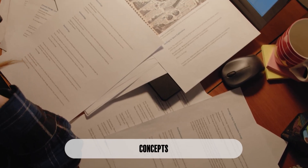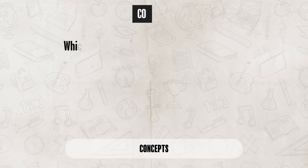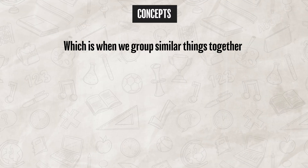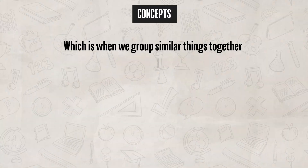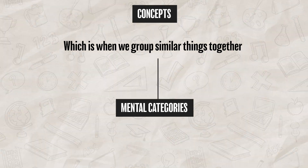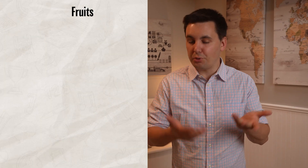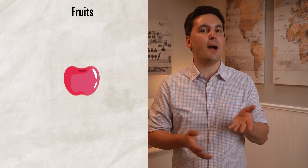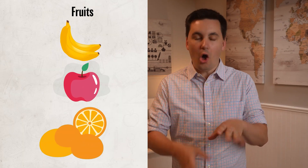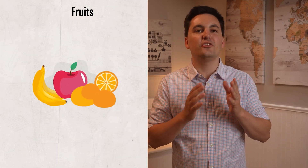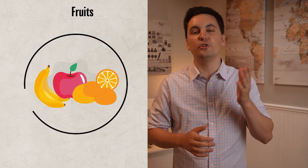We have to start by talking about how we as individuals organize information. When we come across information, we use concepts, which is when we group similar things together. You can remember concepts as mental categories. This is what helps us keep similar items grouped. For instance, the concept of fruit would probably include apples, bananas, and oranges — all different things, but they fit in the same group due to their traits.